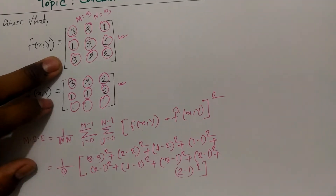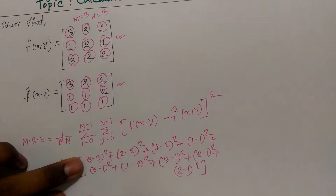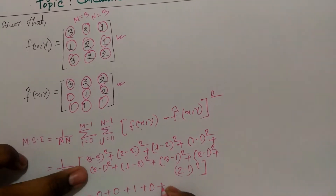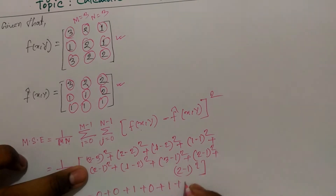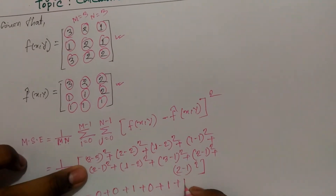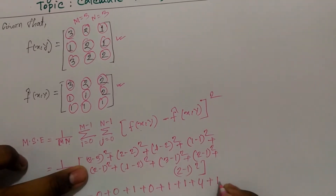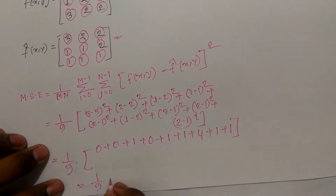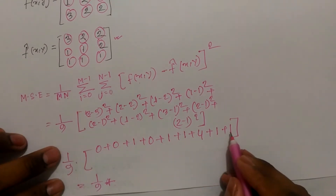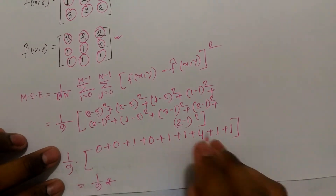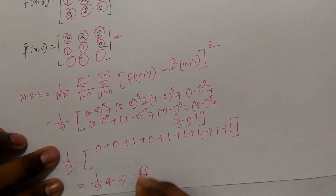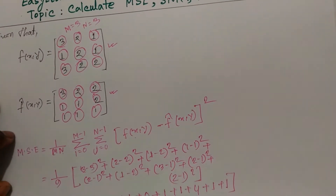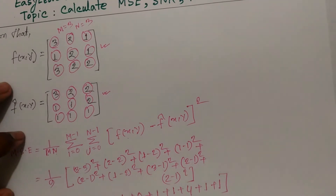Total value is 1 by 9, 1 back 9 into 1, 2, 3, 4, 5, 5, 9. Then total value: the calculation is 1, total value 1, formula is 1.